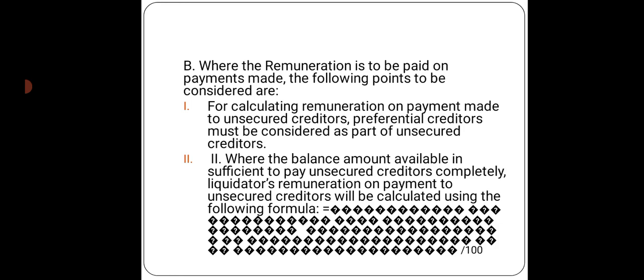Unsecured creditors include equity shareholders and preferential shareholders. Secured creditors include all debts, debentures, bonds of the company, banks, bank loans, creditors, and suppliers of the company. The company has to make the payment by selling off the assets.